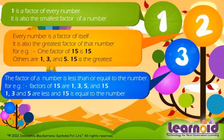The factor of a number is less than or equal to the number. For example, factors of 15 are 1, 3, 5, and 15. 1, 3, and 5 are less than 15; 15 is equal to the number.